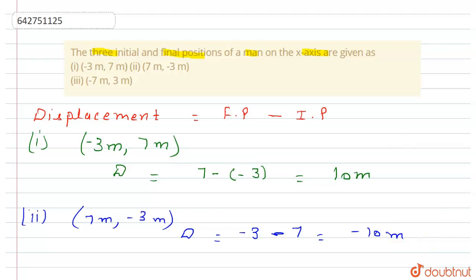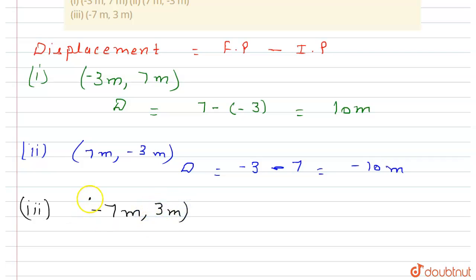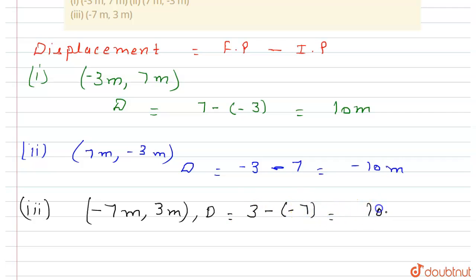In the third part, the initial position is minus seven meters and the final position is three meters. So displacement equals final minus initial, which is three minus of minus seven, which equals 10 meters. So we have found the displacement in all three cases.